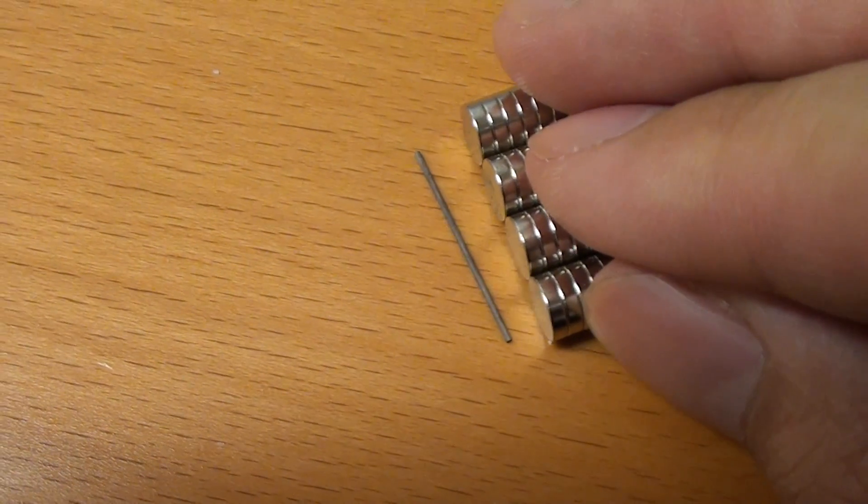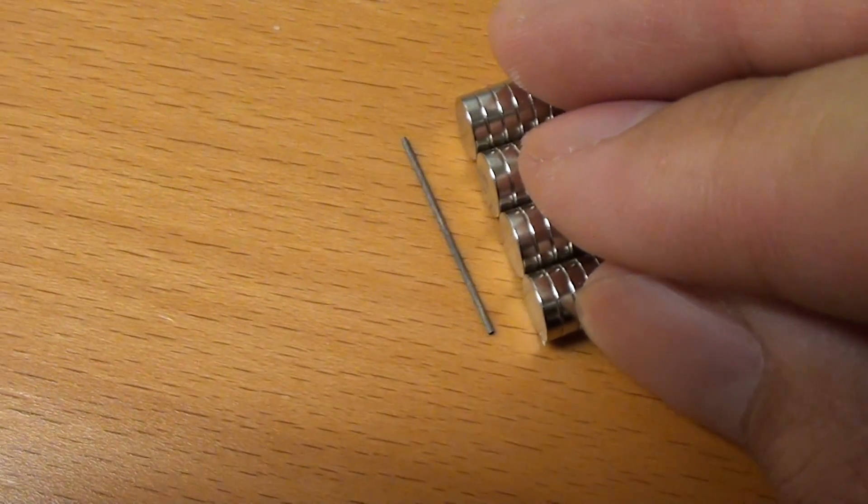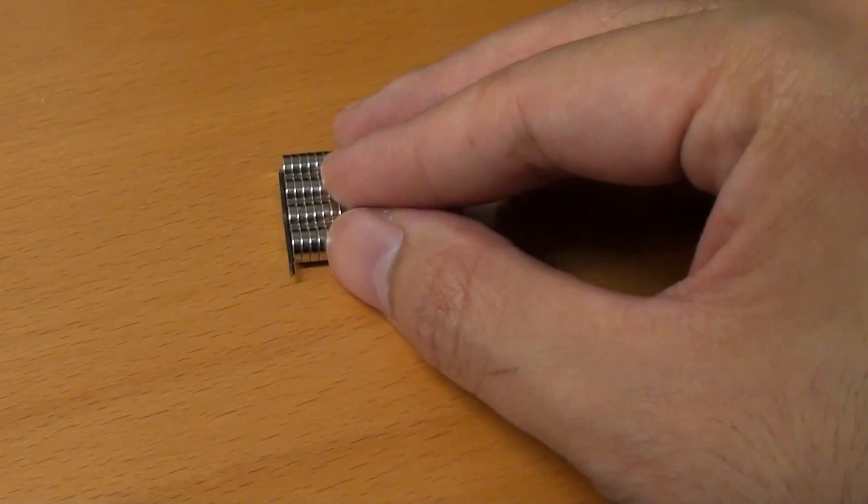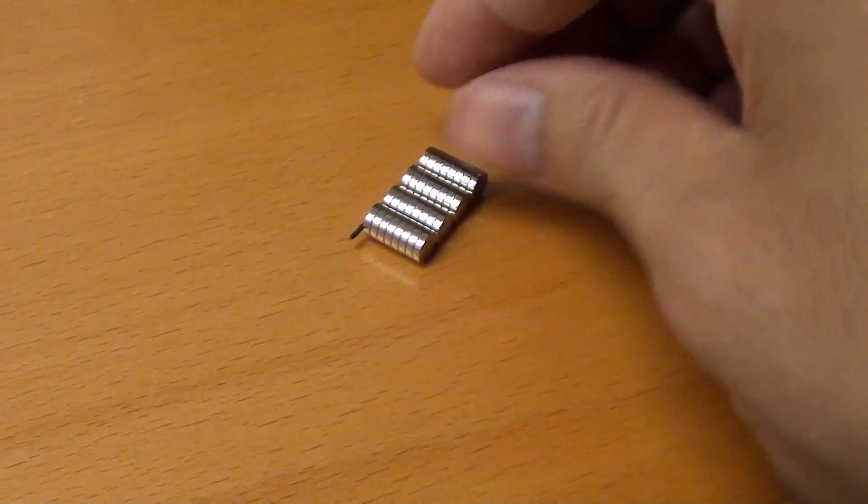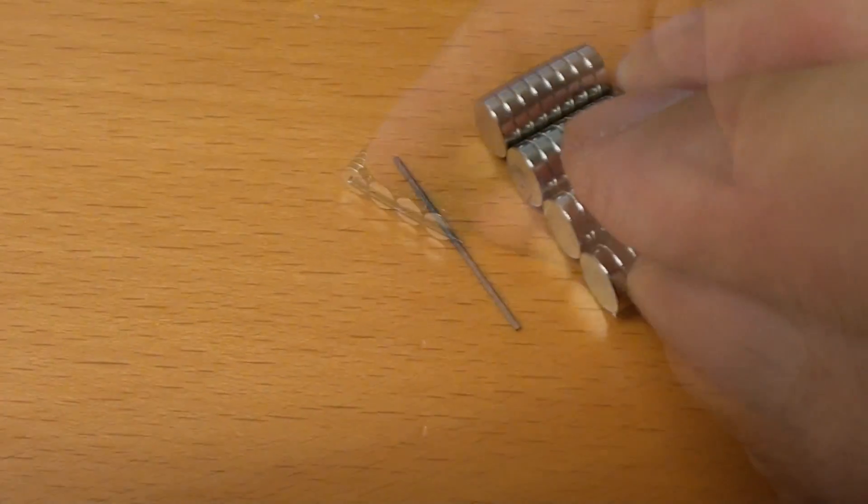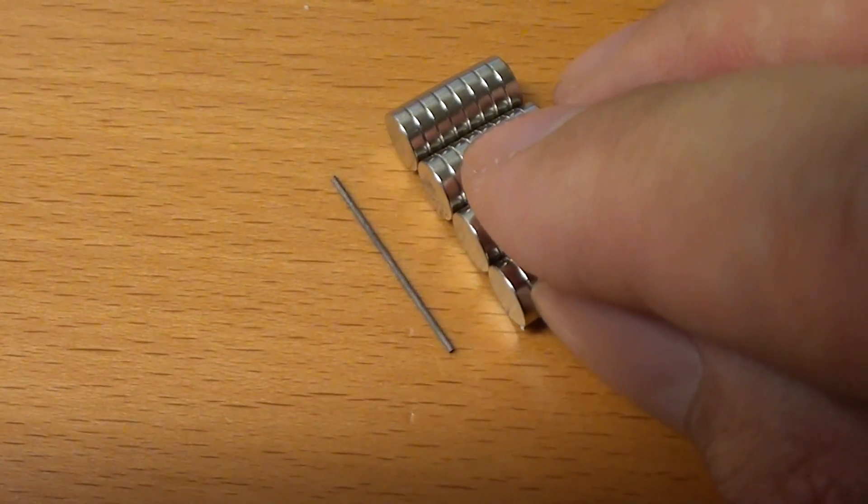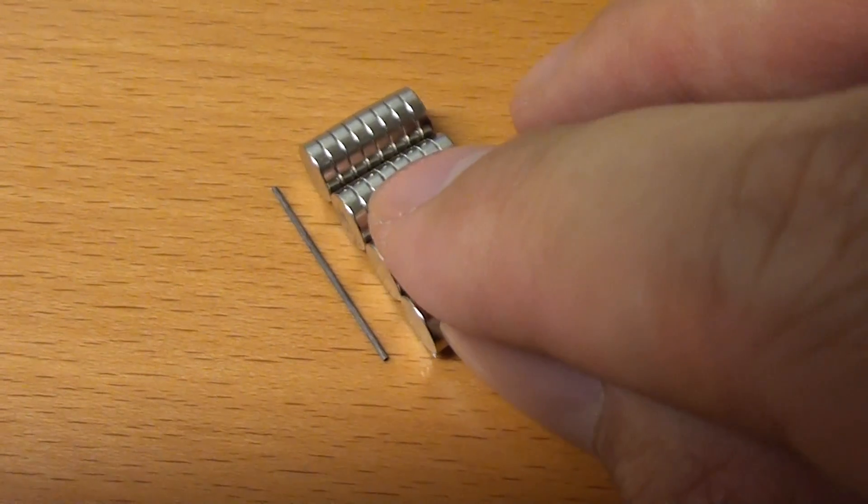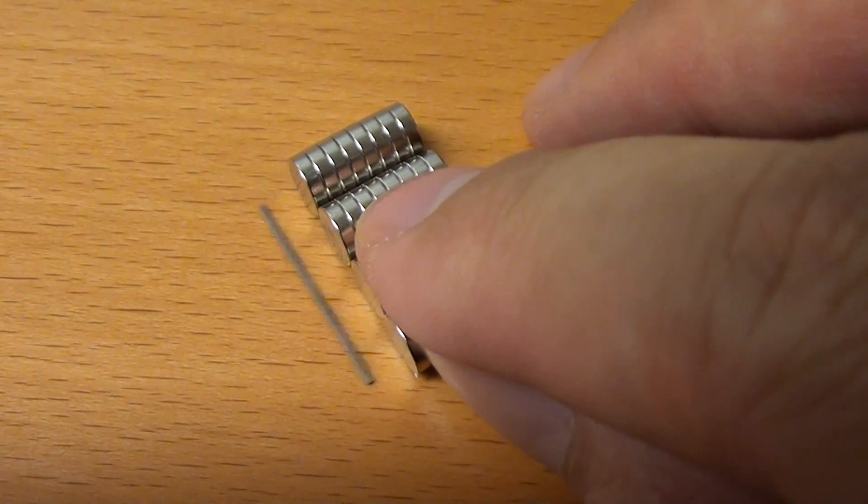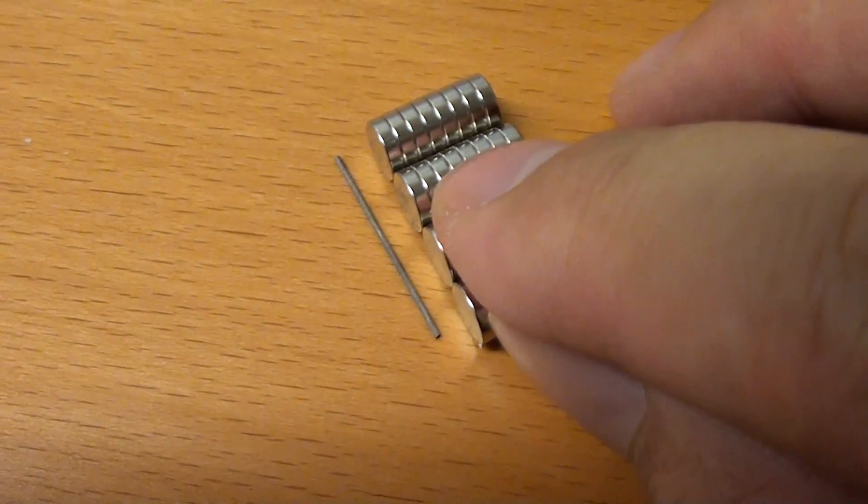Not all pencil lead will do this though. Some have iron filings or other magnetic materials that will actually be attracted by a magnet. If this is the case you'll need to find another brand of pencil lead. Also the pencil lead should be as thin as possible. This one is 0.5mm. Thicker leads have lower cross sectional area to volume ratio and thus will be too heavy to levitate.